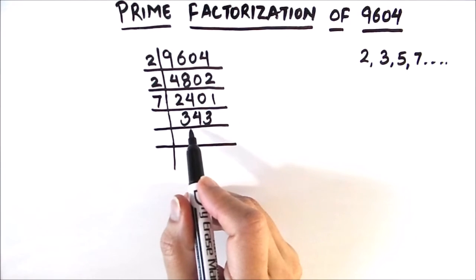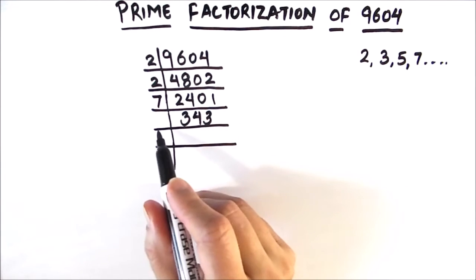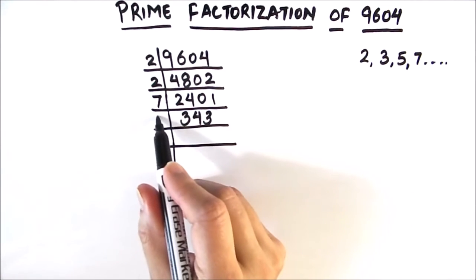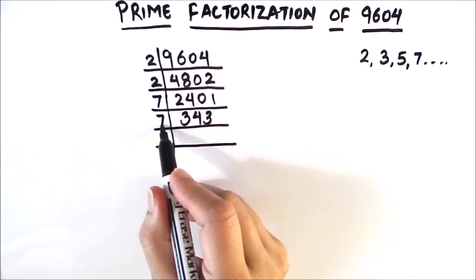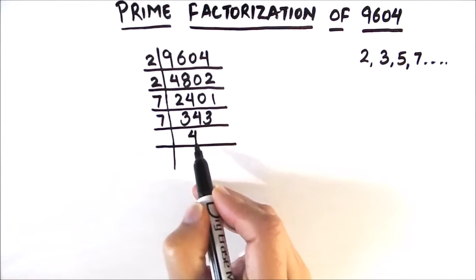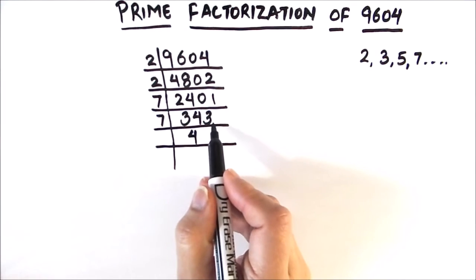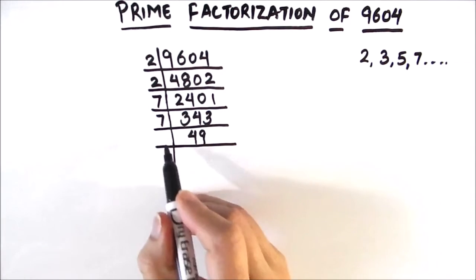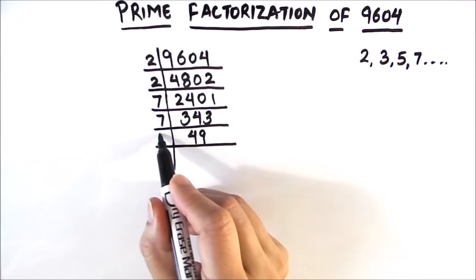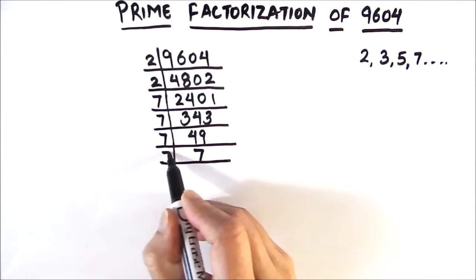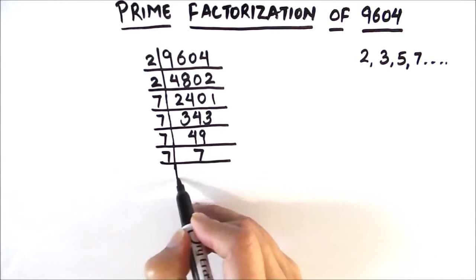343 is an odd number. It is not fully divisible by 3, so we'll use 7 to divide 343. 7 times 4 is 28, remainder 6, this becomes 63, 7 times 9 is 63, giving us 49. And 49 is easily divisible by 7 — 7 times 7 is 49, and 7 times 1 is 7.